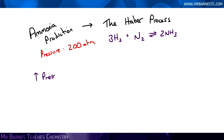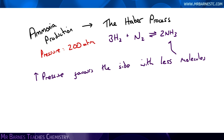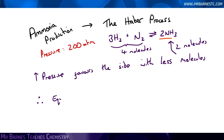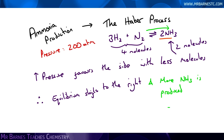Moving on to pressure: when you increase the pressure, the particles are all going to be closer together. What will happen is it will favour the side with the least molecules, which in this case is the products — NH₃. I've got two NH₃ molecules, whereas on the left-hand side I have three hydrogen molecules and one nitrogen, so four in total. Therefore in this reaction the equilibrium will shift to the right, and I'm going to get more NH₃ produced — my yield is going to increase.